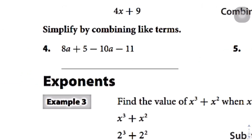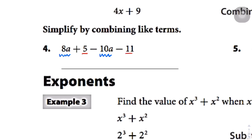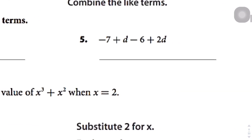Question number 4: we have 8a plus 5 minus 10a minus 11. One thing I like to do is underline my like terms. I'm going to use a squiggle for the variable terms and a different color for the constants. So 8a minus 10a: you have positive 8a and you're taking away 10a, so what you're left with is negative 2a. And then for the constants, we have 5 and then negative 11, or 5 minus 11. Since negative 11 has a bigger absolute value, you end up with negative 6.